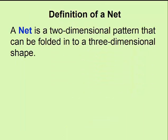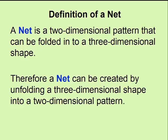A net is a two-dimensional pattern that can be folded into a three-dimensional shape or object. It is kind of like a model. In our first couple examples, we'll begin by unfolding a three-dimensional shape into a two-dimensional net.